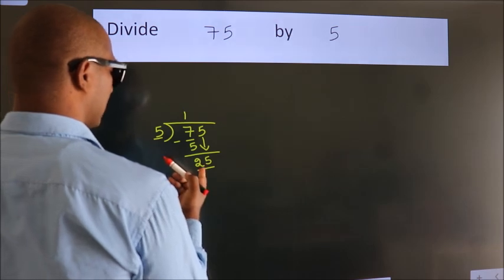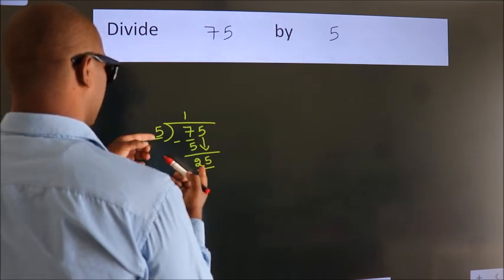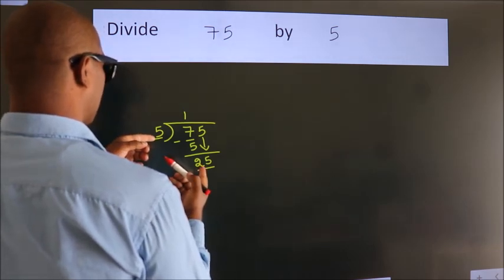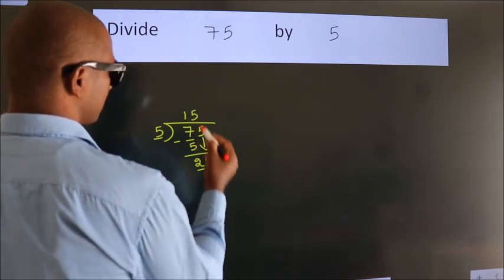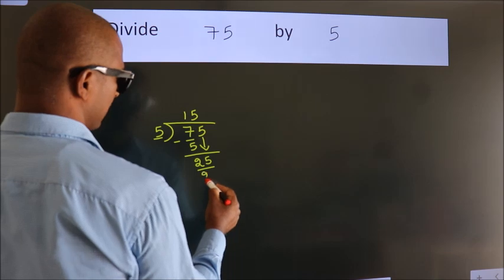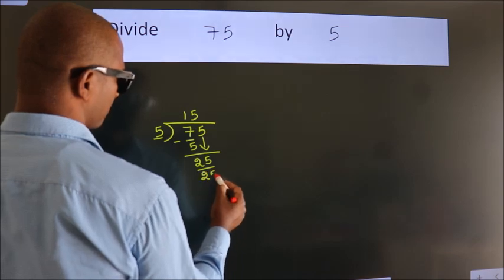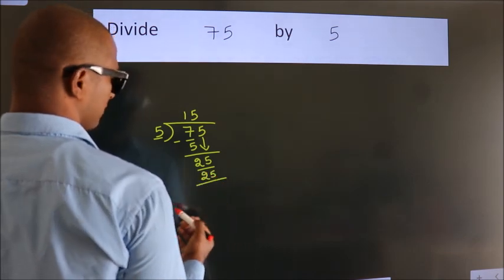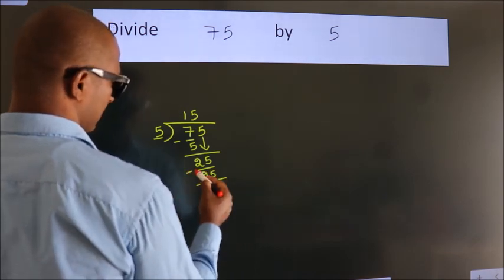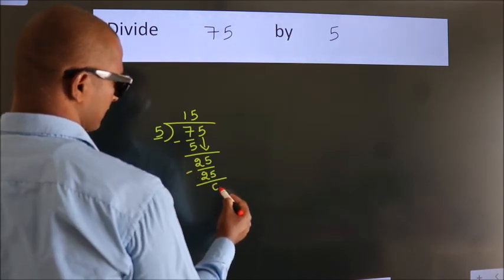When do we get 25 in the 5 times table? 5 fives are 25. Now we subtract. We get 0.